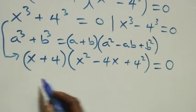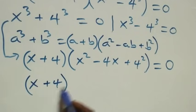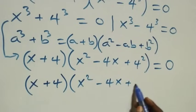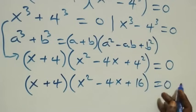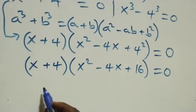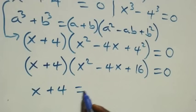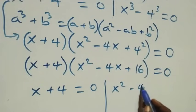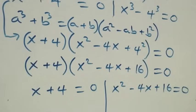From this we have two possible cases: x plus 4 equals 0, giving x equals negative 4 as a real solution; and x² − 4x + 16 equals 0, which is a quadratic equation.